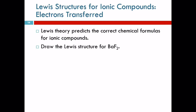Lewis theory helps us to predict the formulas for compounds. Let's look at barium fluoride. Barium has two valence electrons. Fluorine has seven valence electrons. So if barium and fluorine are meeting up to swap electrons and get more stable, barium is trying to get rid of two valence electrons. Fluorine is trying to get one.